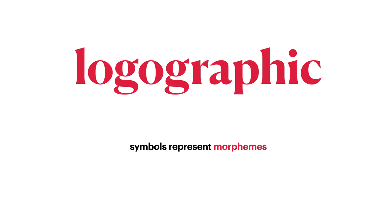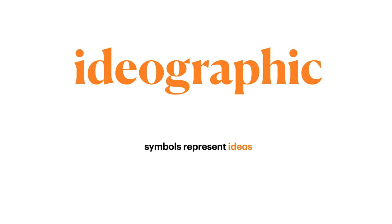Some writing systems use the logographic principle, where symbols represent morphemes. Much rarer are ideographic symbols, where symbols represent ideas. Very few writing systems use this, and those that do, do so relatively sparingly.